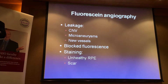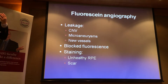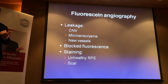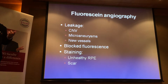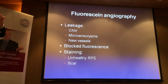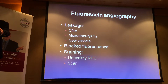Fluorescein angiograms have the advantage of showing leakage. If you do a dynamic pathway, you can see the early flow through the vessels, especially before it leaks. You'll want to look for leakage from CNV, from micro-aneurysms, from diabetes, or from neovascular vessels. Block fluorescence and staining are additional features. These are the things for which you use the fluorescein angiogram — which is different from the OCT.